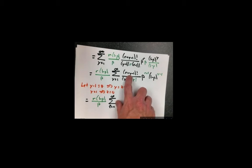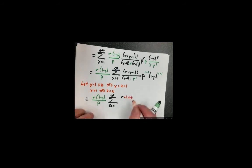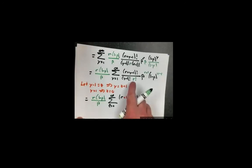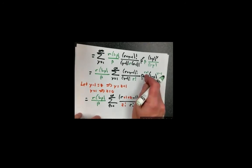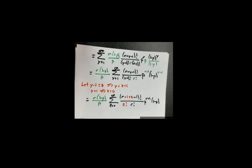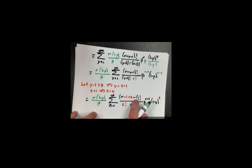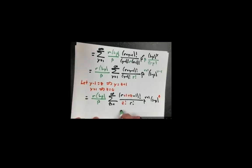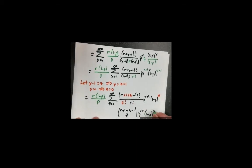Continuing to rewrite: I keep the factor r times (1 minus p) over p, and now sum from z equals 0 to infinity. The factor y becomes z plus 1. Plugging in: (r plus 1 plus z minus 1) factorial over z factorial times r factorial, times p to the r plus 1 times (1 minus p) to the z. The 1 and minus 1 cancel, so this is r plus z factorial over z factorial times r factorial — which is r plus z choose z, or equivalently r plus 1 plus z minus 1 choose z — times p to the r plus 1 times (1 minus p) to the z.